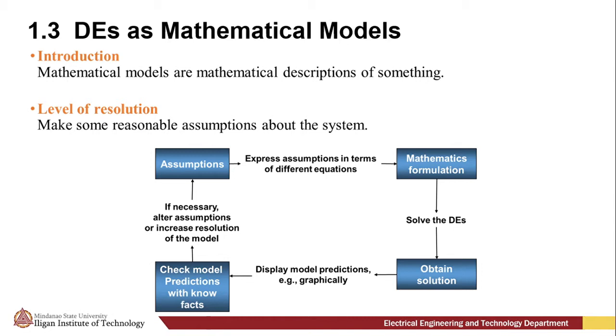The mathematical description of a system or phenomenon is called a mathematical model, and it is constructed with certain goals in mind. For example, we may wish to understand the mechanism of certain ecosystems by studying the growth of animal populations in that system, or we may wish to date fossils by analyzing the decay of radioactive substances.